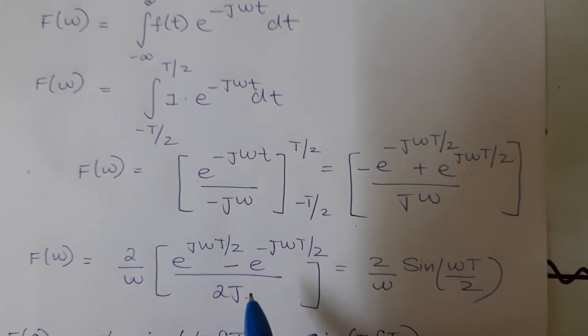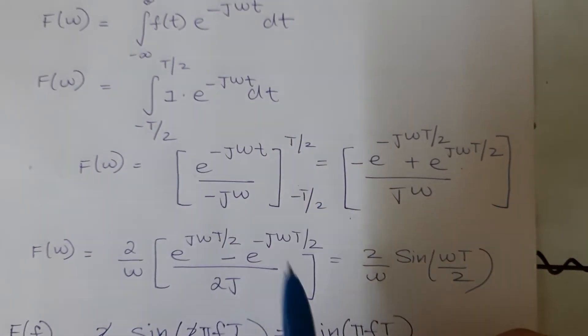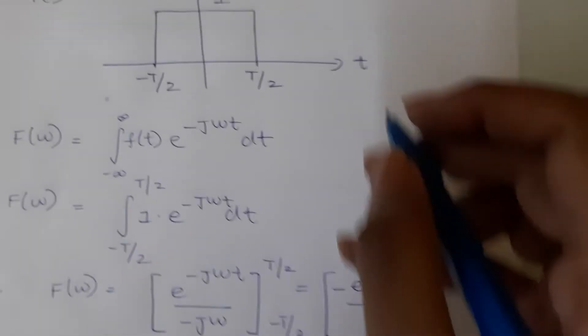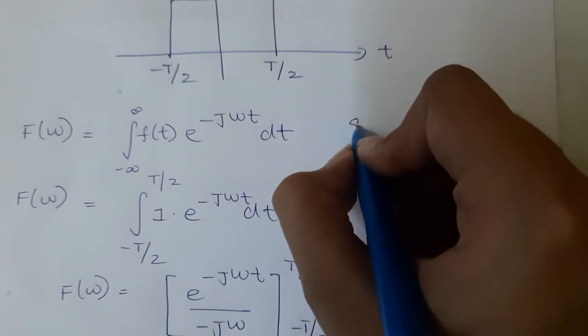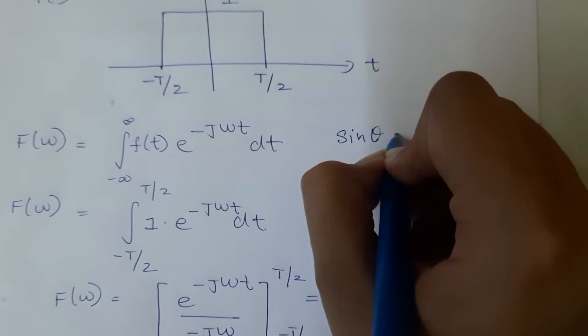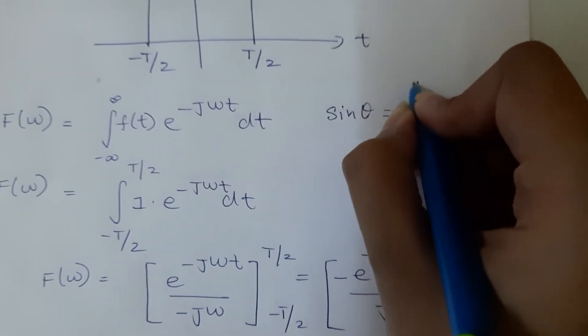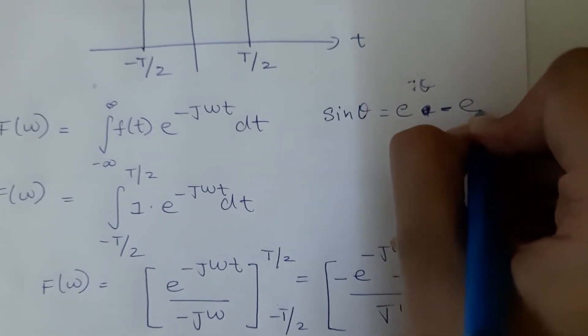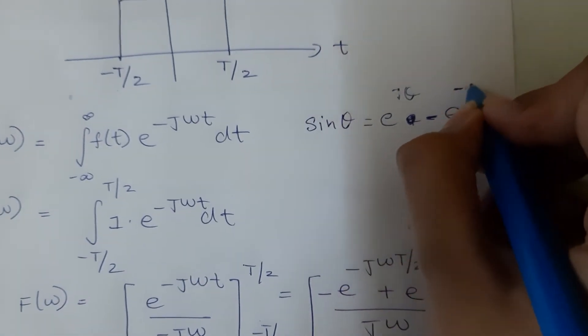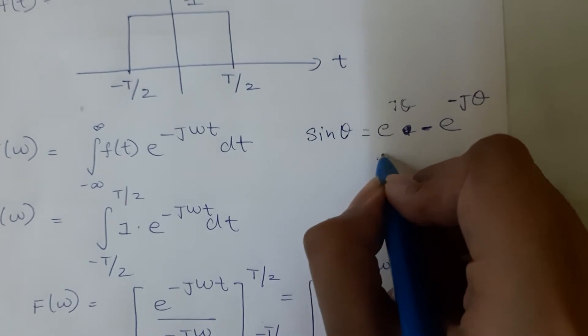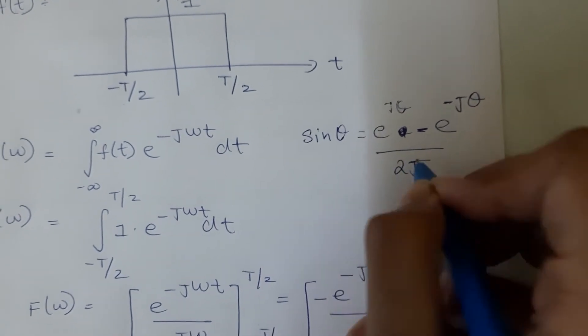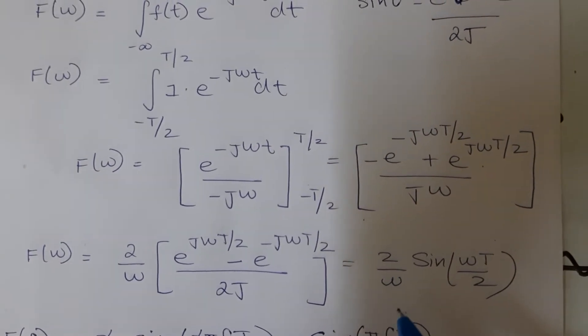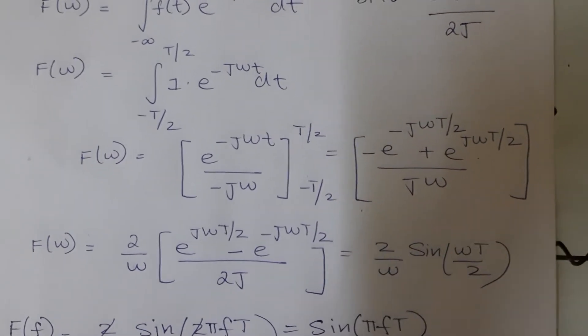This is nothing but the definition of sine function in Euler form. Sine theta is written as e power j theta minus e power minus j theta by 2j. So when I simplify I can get 2 by omega sine omega tau by 2.